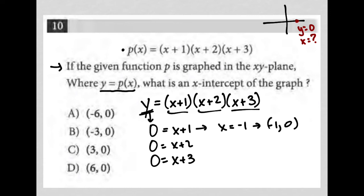For the second option, I can subtract 2 from both sides, which would lead to x equaling negative 2, and therefore an x-intercept of negative 2, comma 0.